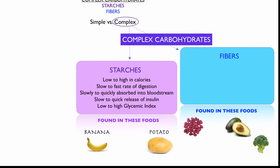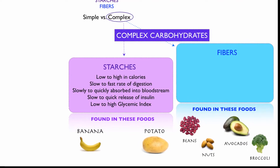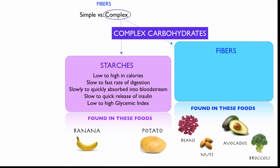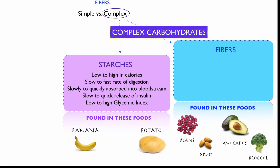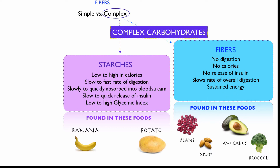Fibers are found in foods like legumes, beans, nuts, avocados, and broccoli, though fiber is not found exclusively in these foods. Fiber itself has no digestion — it cannot be digested by our body and actually moves through it. So it has no calories, no release of insulin, and a very slow rate of digestion that slows the overall digestion of whatever you've eaten along with it. Therefore, it provides sustained energy. In theory, it has a zero glycemic index, but since there's no such thing as eating fiber by itself, a zero GI for fiber is theoretical — because there's no digestion, there would be no increase in blood sugar.